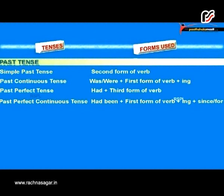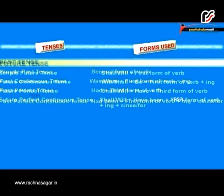Past perfect continuous tense: had been plus first form of verb plus -ing, plus since or for.